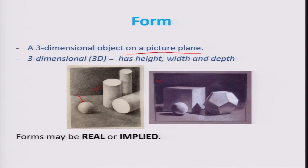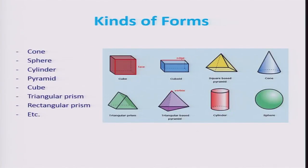Forms typically have all three dimensions: height, width, and depth. Forms can be either real or implied. These are some regular forms — a cone, a sphere, a cylinder, a pyramid — all illustrated here as different three-dimensional shapes. When talking about CAD and representing these kinds of forms, they involve solid models, and because of the addition of a third dimension, there is some extension in the computational domain.